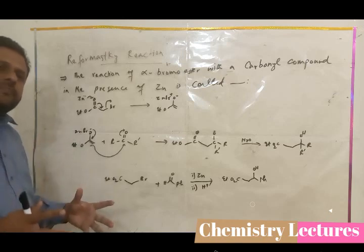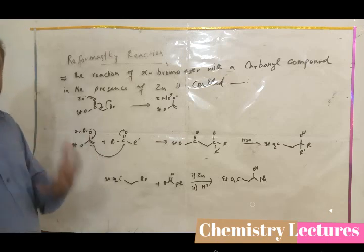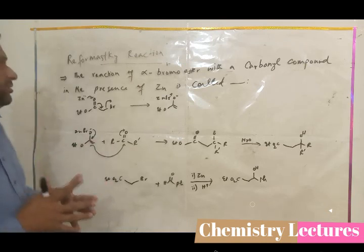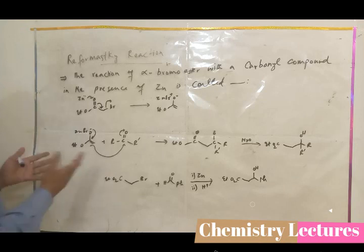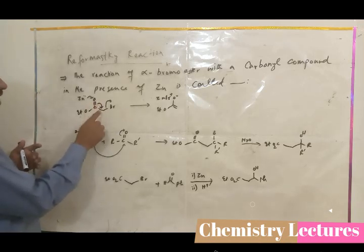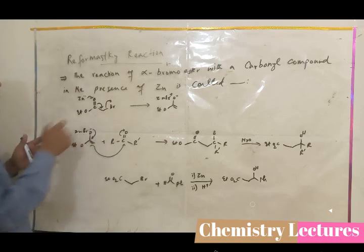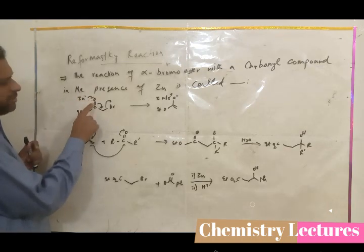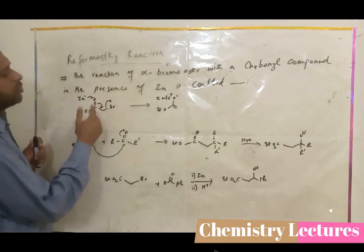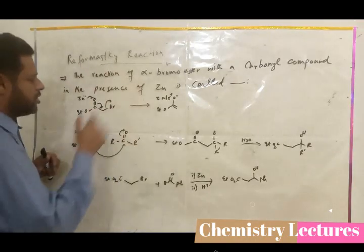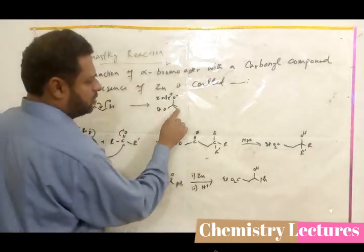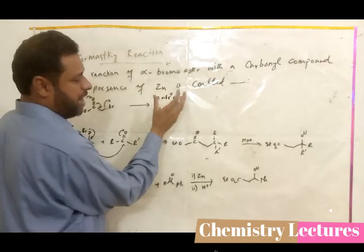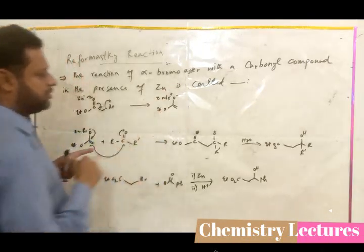The reagents are: the alpha-bromo ester, which contains bromine on the alpha carbon, reacts with any aldehyde or ketone in the presence of zinc. In the mechanism, when you treat the alpha-bromo ester with zinc, zinc donates electrons and this double bond moves to the alpha carbon so the bromine is removed. The double bond comes on the alpha carbon, and carbon-oxygen has a single negative charge, so zinc bromide becomes attached to it in a shared bond — an enolate-type intermediate is formed.